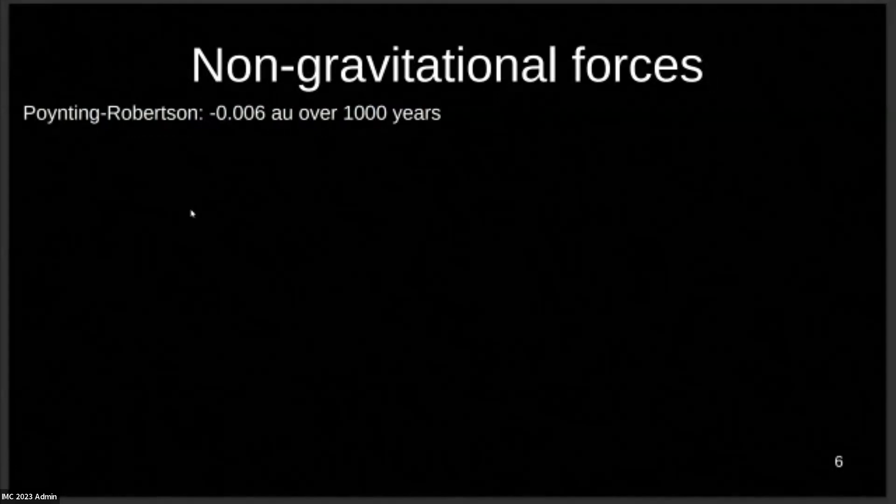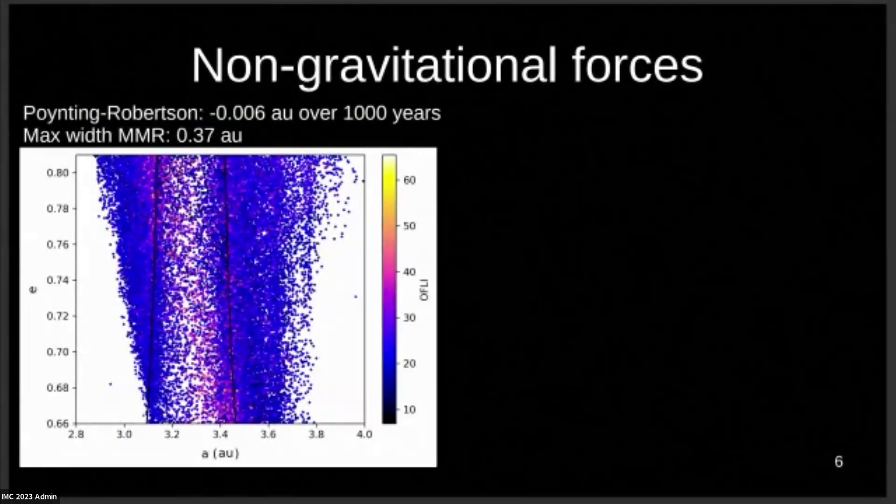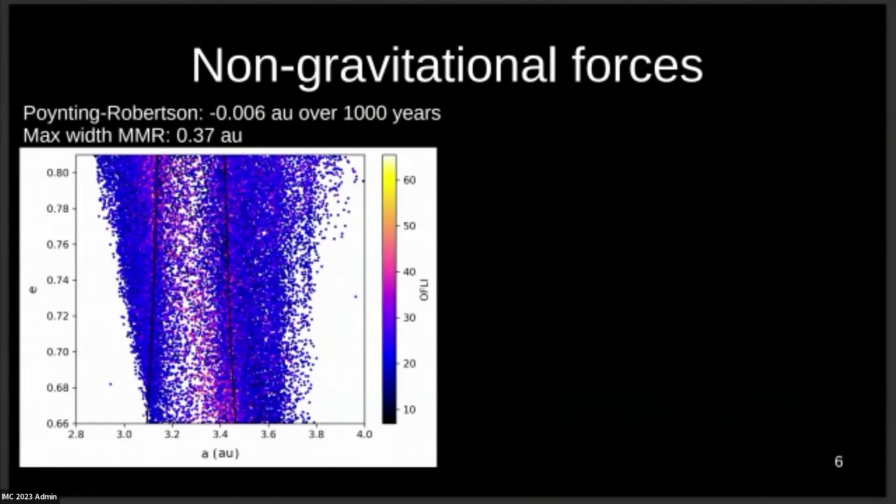Another part of the answer is also the width of the mean motion resonance. I worked with somebody in my lab, Lemme Mölen-Seyen-Fest, who was able to compute the border of this mean motion resonance. You can see it in black in my map here. And the maximum width for the Draconids is 0.37 astronomical units. So it's a very wide MMR, and the Poynting-Robertson is not so important.